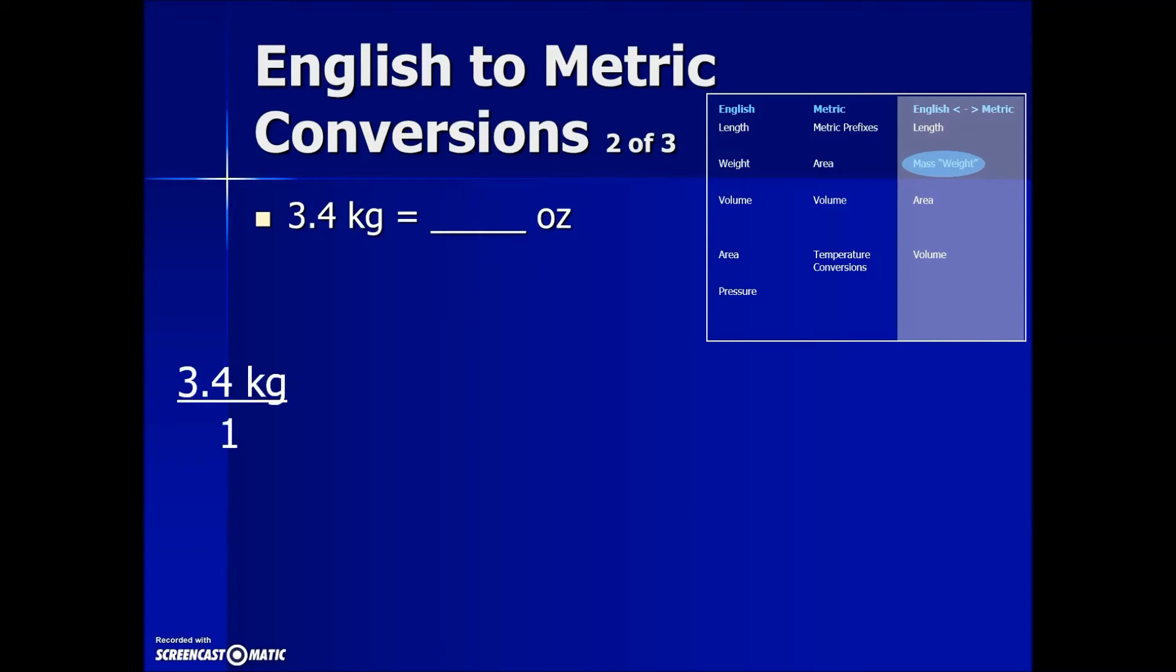We take the given measurement and express it as a fraction with a denominator of 1, but we run into a little bit of a problem in this one. There is no direct way to go from kilograms to ounces. That means the problem will require more than one conversion factor, and here's what it'll look like.